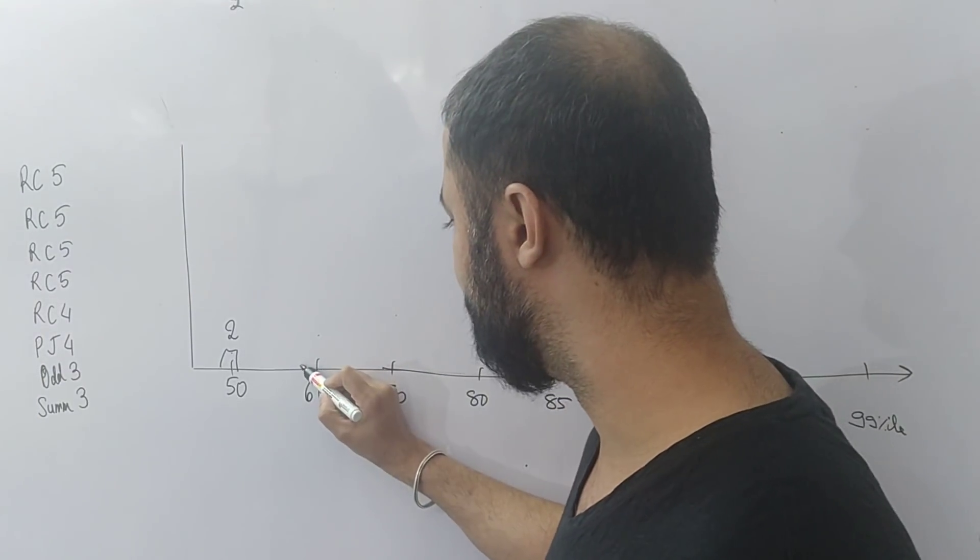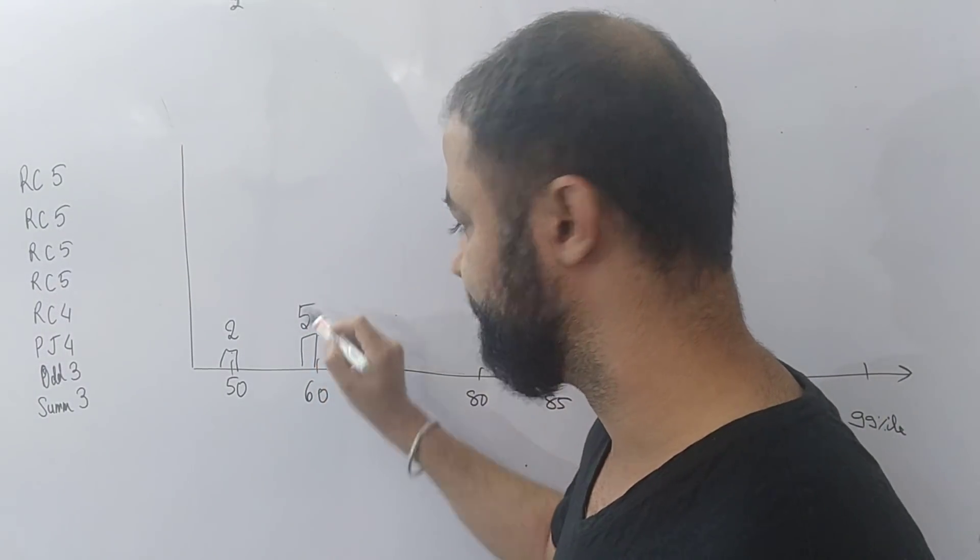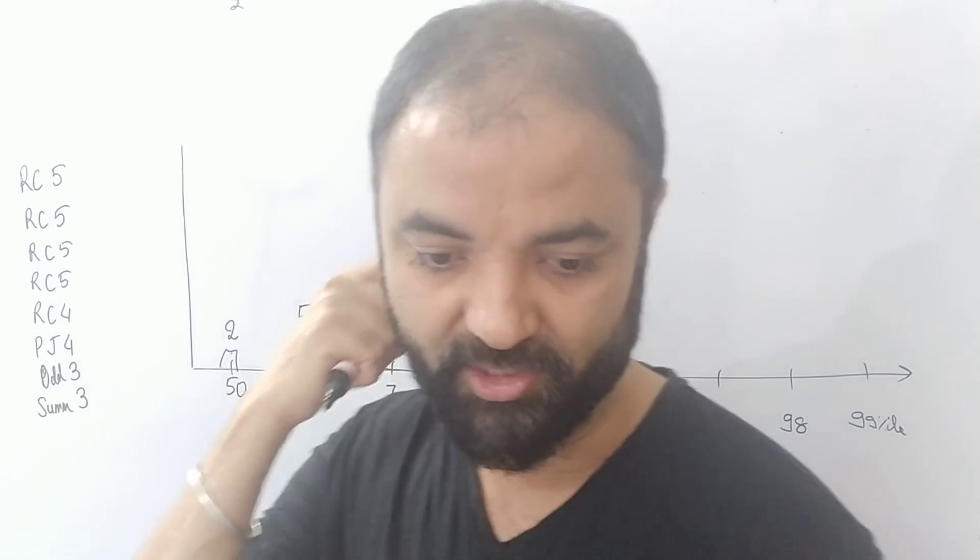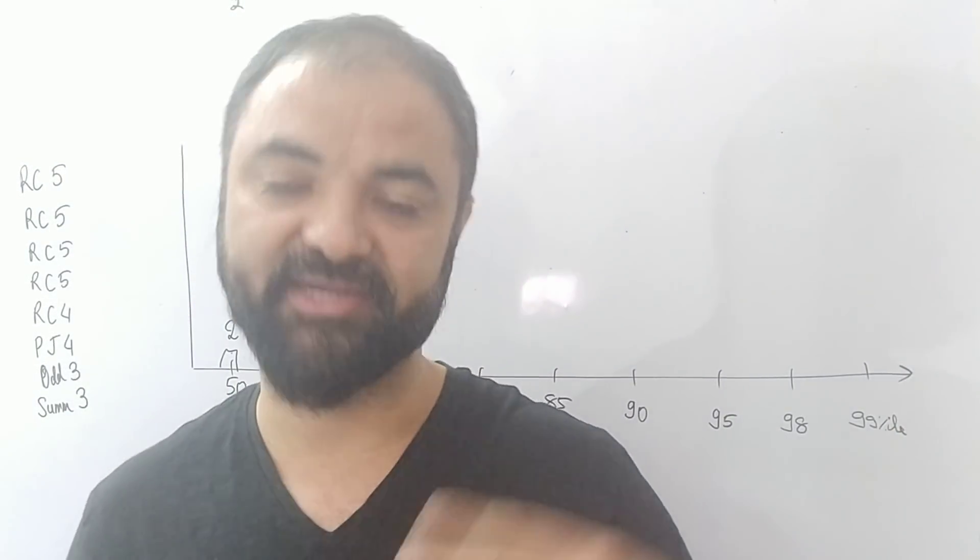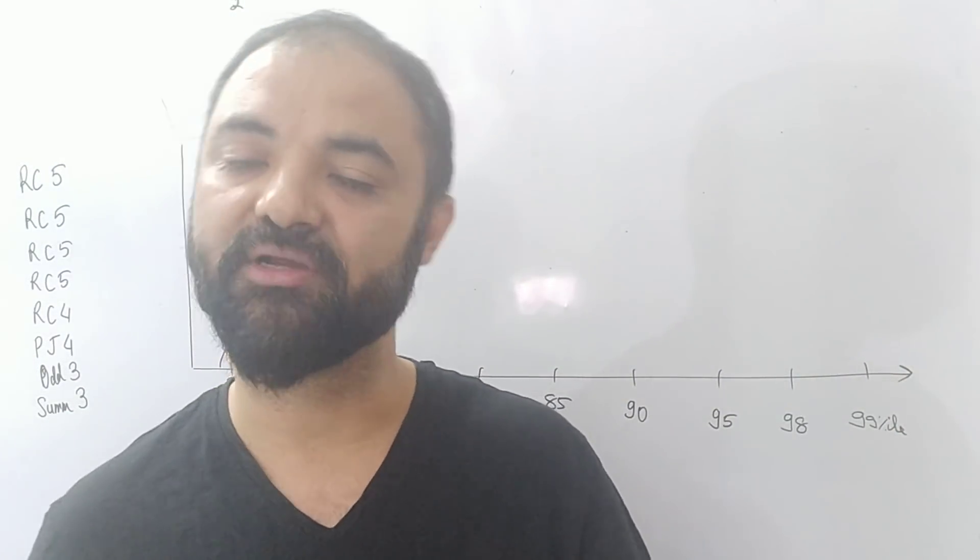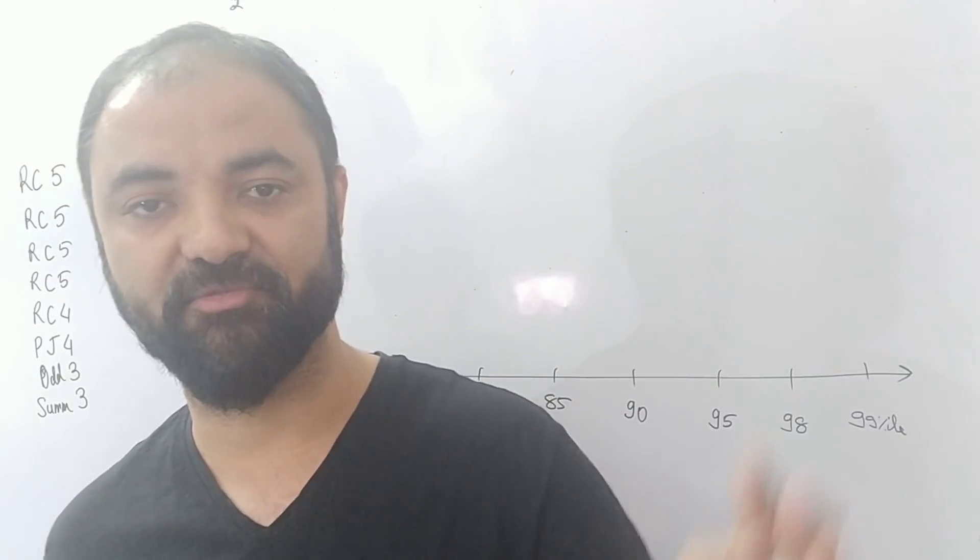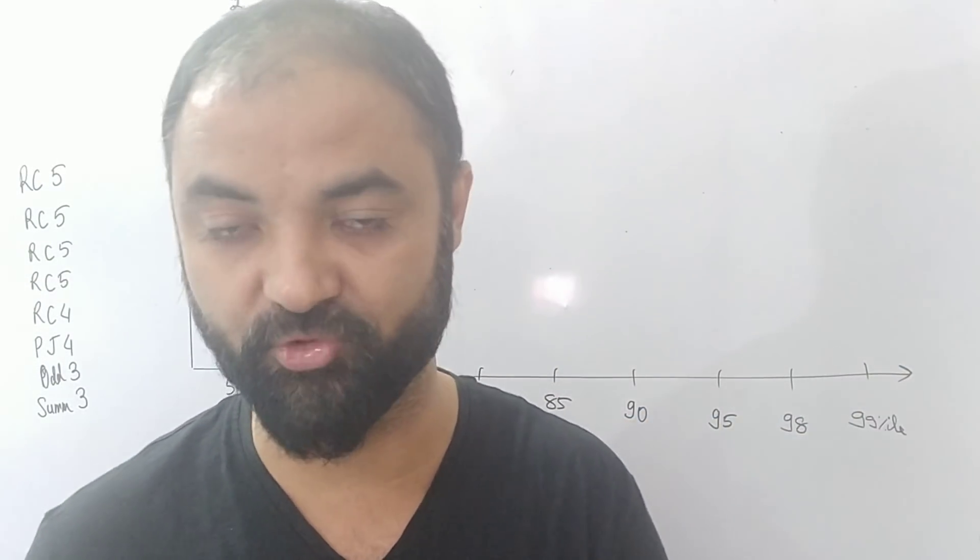60 percentile according to me will be around 5 questions correct. I am talking about the correct. So attempt you have to find out. For example, I did 8 attempts, I did 3 wrong, 5 right, so because of negative marking my score will be 4 then.